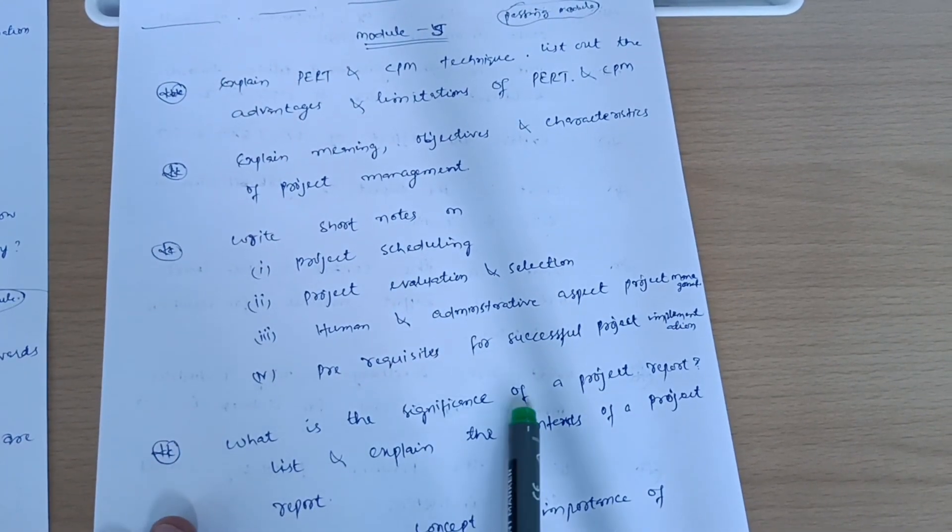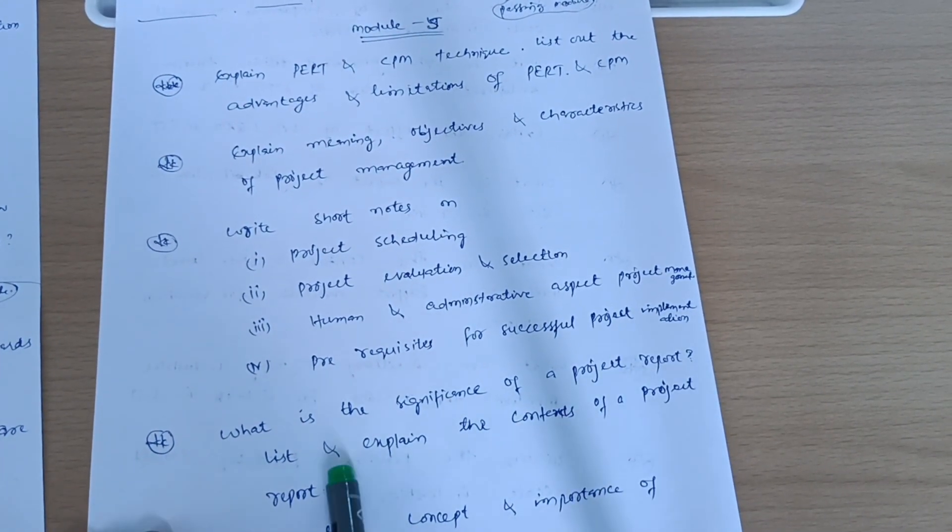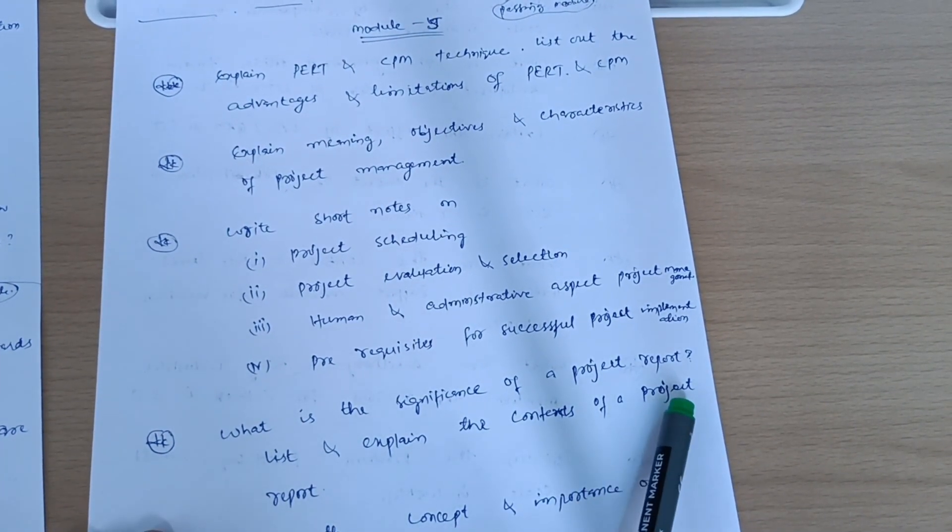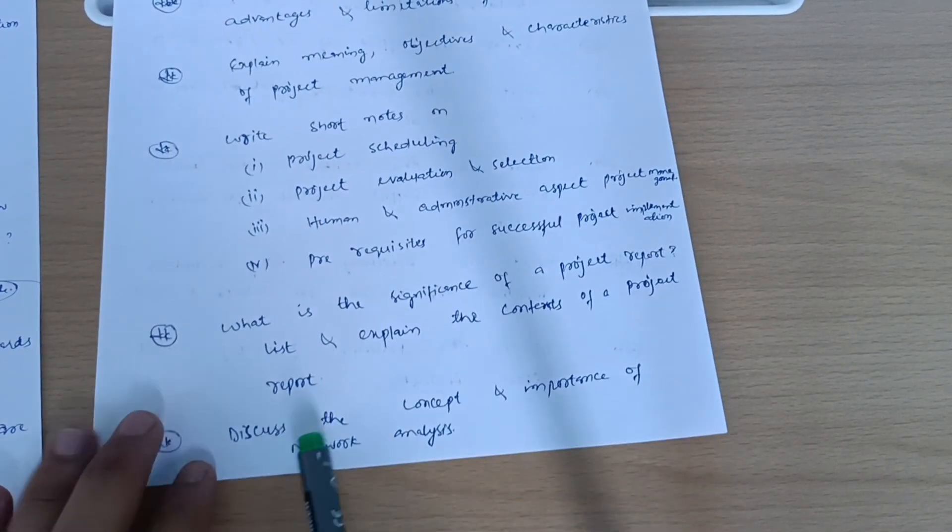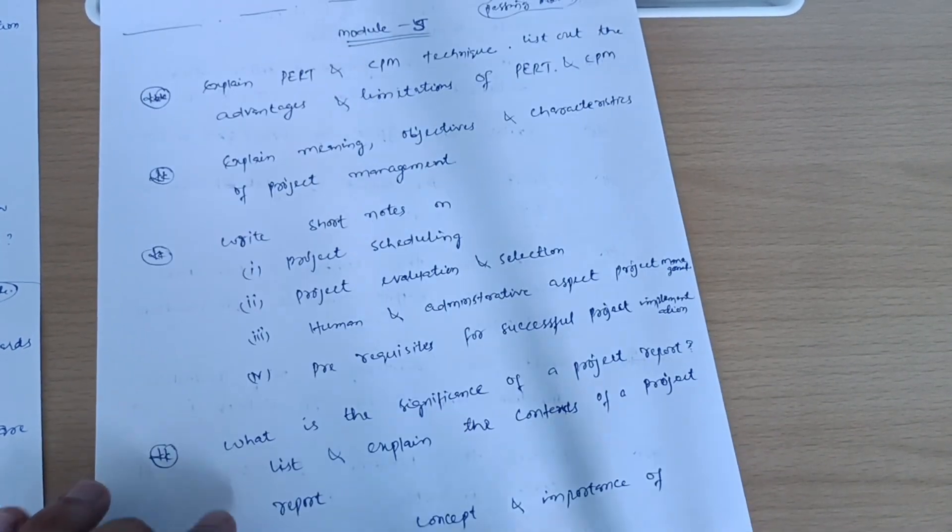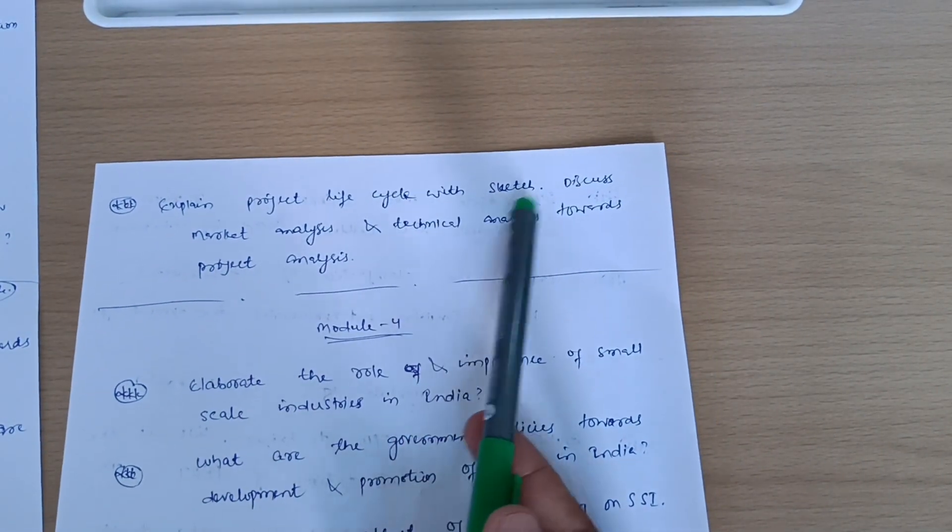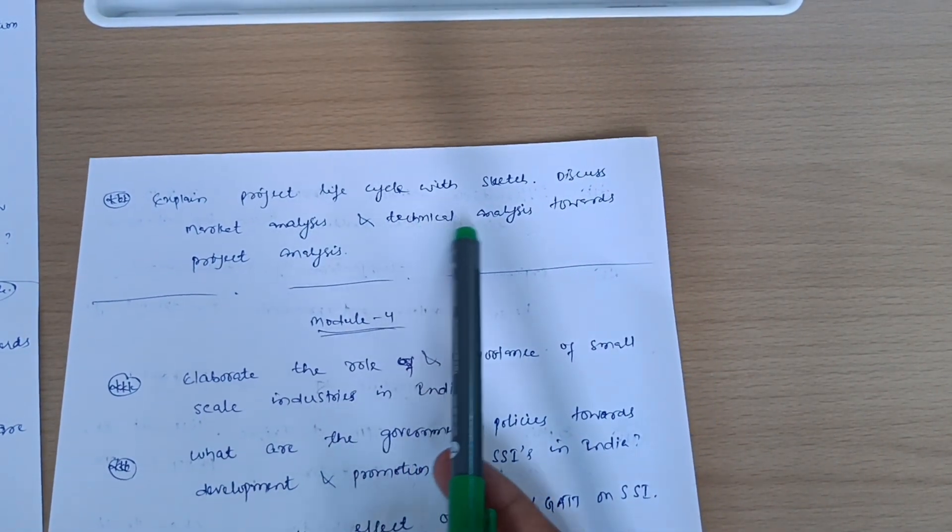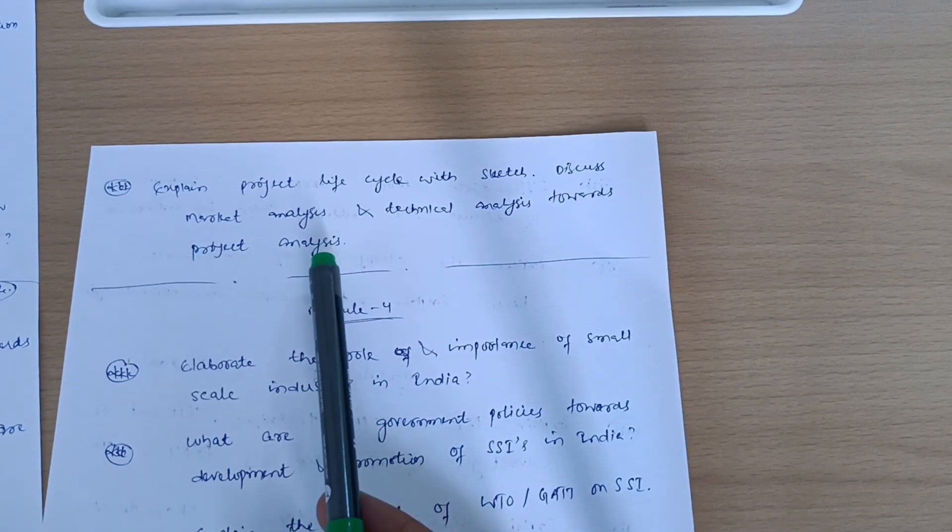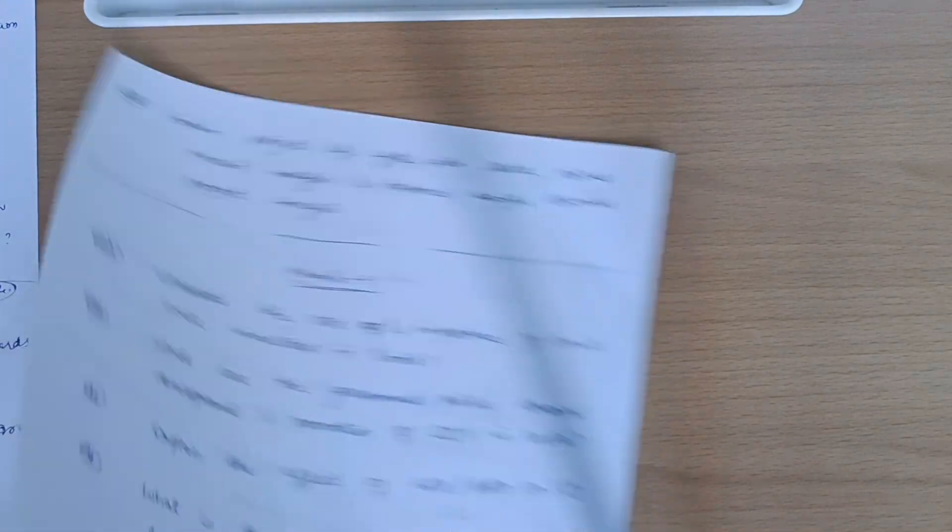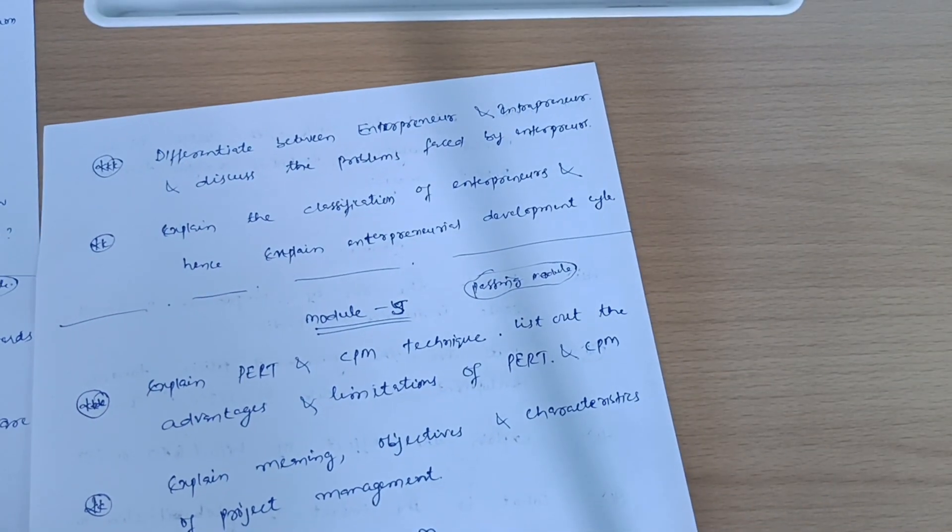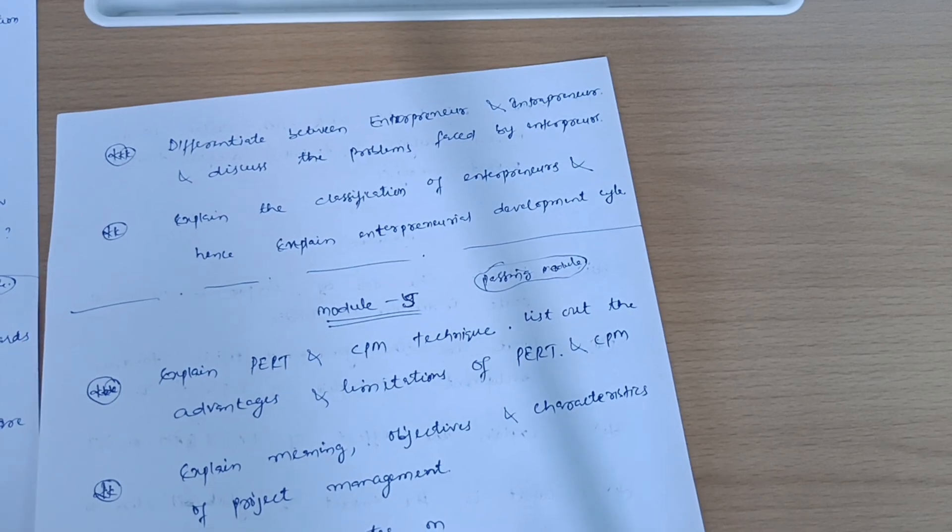What is the significance of a project report? List and expand the context of a project report. Next is discuss the concept and importance of network analysis. Next is explain project life cycle with sketch. Discuss market analysis and technical analysis towards project analysis. So these are the six questions which you have to cover from Module 5. Next is now Module 2 which I will discuss.